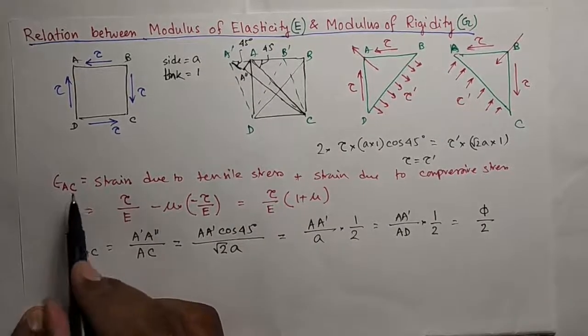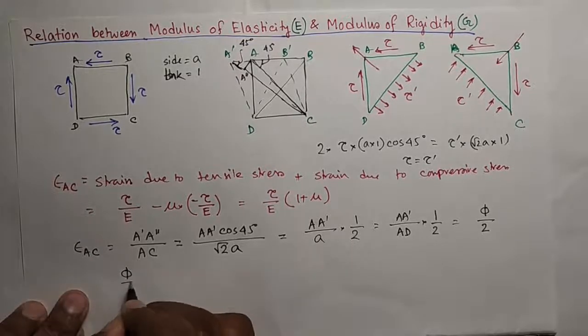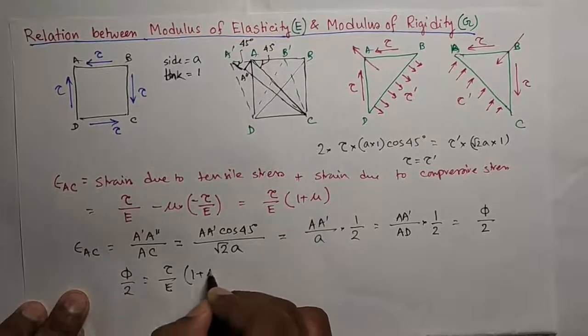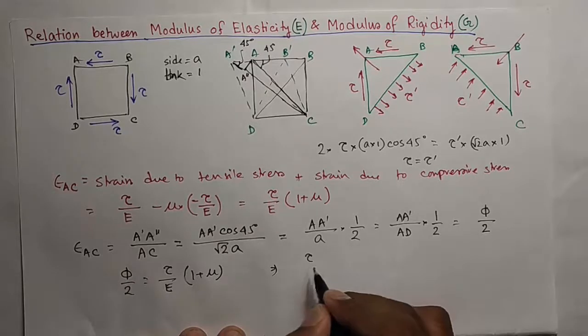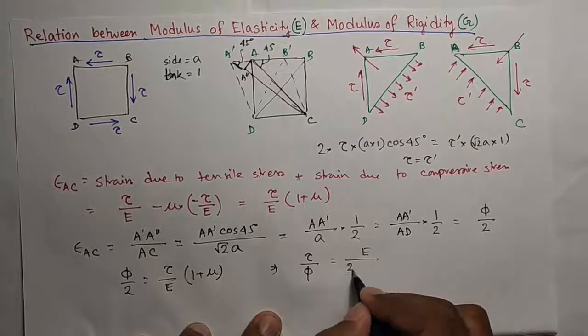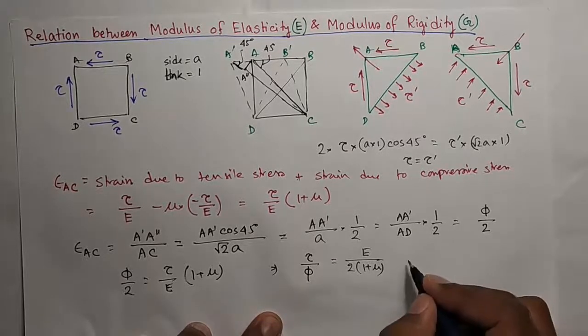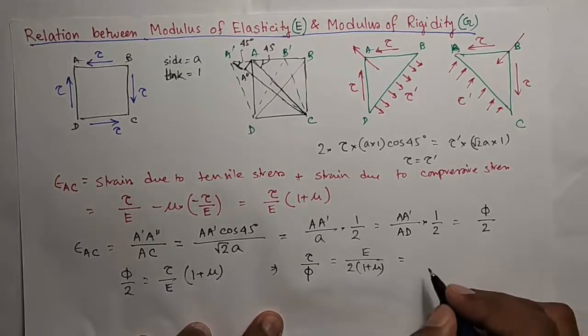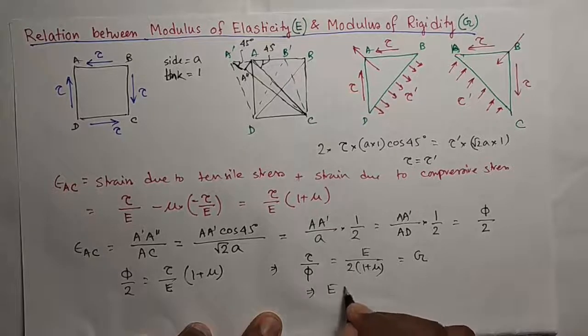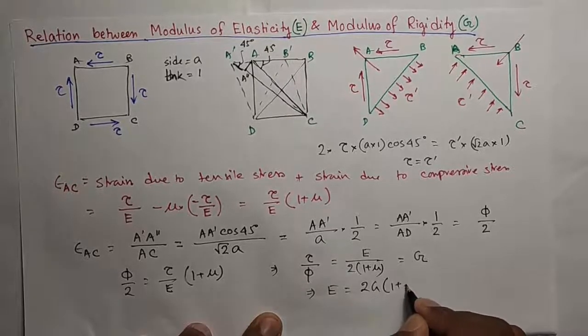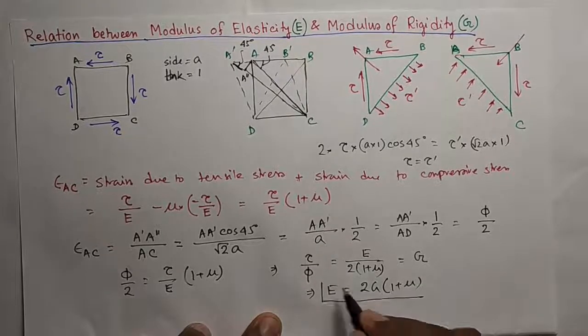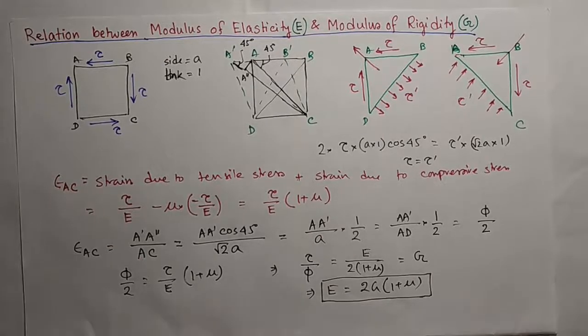So, you get Tau by Phi is equal to E by 2 into 1 plus Mu and this Tau by Phi, the shear stress by shear strain is nothing but the shear modulus or modulus of rigidity G. E equals to 2G into 1 plus Mu. Mu is the Poisson's ratio. So, this is the relation between the modulus of elasticity and the modulus of rigidity.